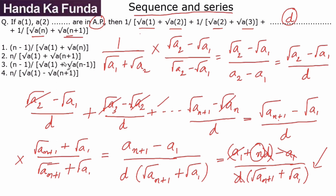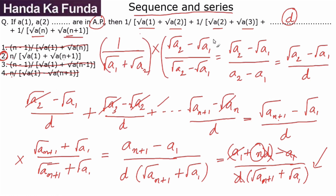Checking the options: options 1 and 3 do not have n in the numerator, so they are ruled out. Between options 2 and 4, option 4 has a minus sign in the denominator, which is incorrect. Option 2 has √a1 + √a(n+1) in the denominator, matching our result — so option 2 is the answer. This is a slightly long question due to the rationalization steps, but straightforward if you're familiar with such techniques.